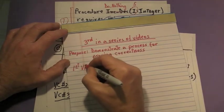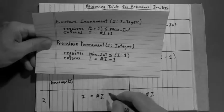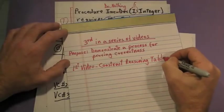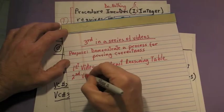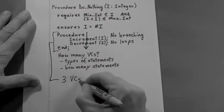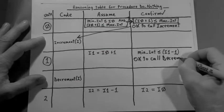In the first video, we showed you how to create a reasoning table for an operation called do nothing. In the second video, we showed you how to generate verification conditions, also known as VCs, for the operation do nothing.